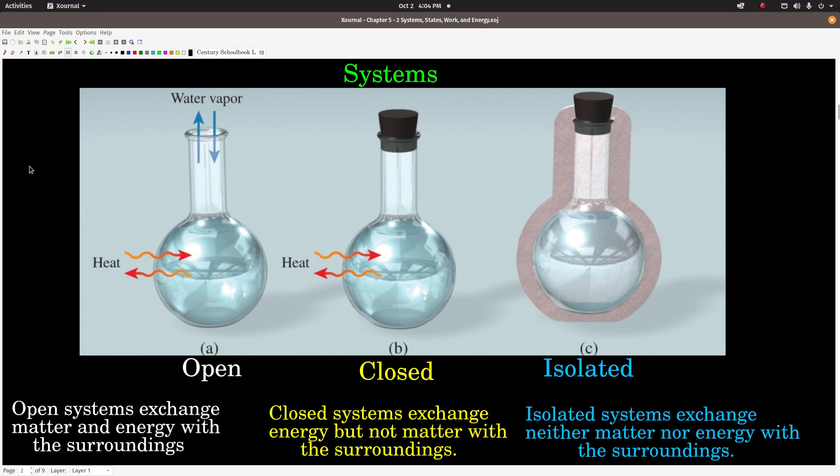The types are open, closed, and isolated. In an open system, like this flask on the left here that doesn't have a stopper in it, an open system can exchange both matter and energy with the surroundings. So water, if there's water here, it can evaporate or it can condense back down. So matter can move back and forth, and energy can flow into or out of this container also.